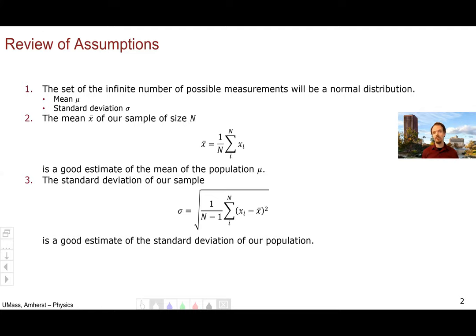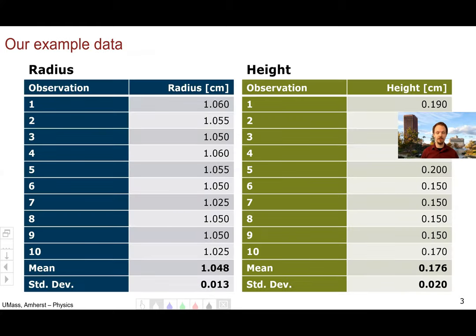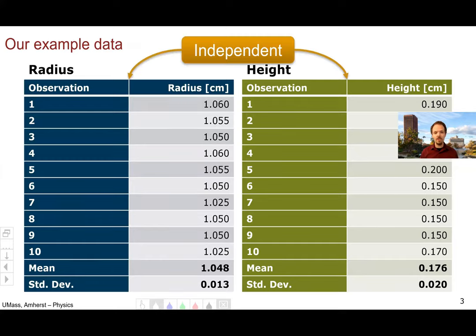So in this video, we're going to go through how to propagate errors using Monte Carlo, using our example data that we've been using throughout this lab. Here is our example data: 10 measurements of radius and 10 measurements of the height or thickness of our nickels, along with the mean and standard deviation. We're assuming that these measurements are independent — that the thickness of the nickel and its radius aren't correlated with each other in any way.